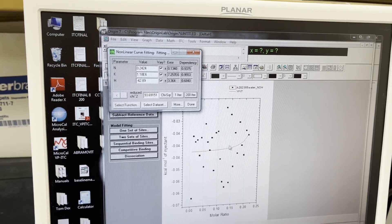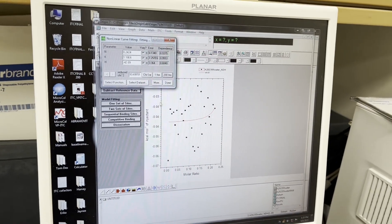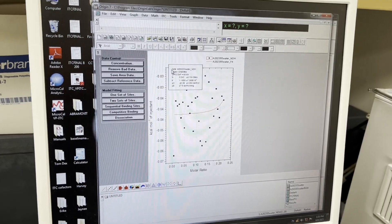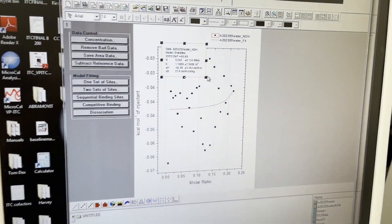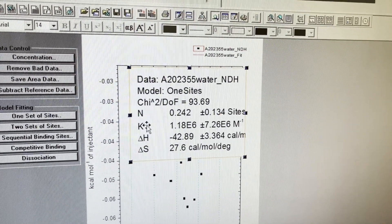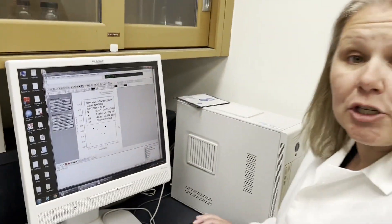This curve fit of course is going to be terrible because there's no real binding there. But pretend you had nice binding. And that's how you get your KD and some thermodynamic parameters. Because once you hit done this will give you your N, your K, your delta H, and your delta S. So that will give you all of that information.